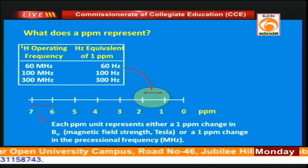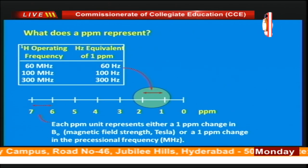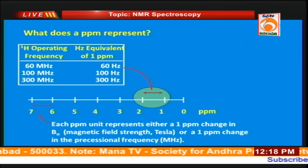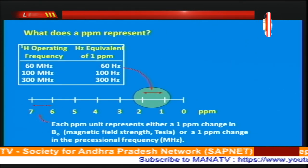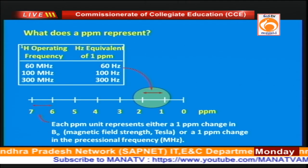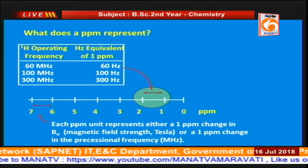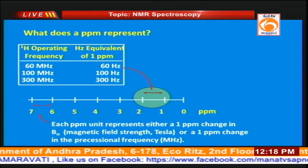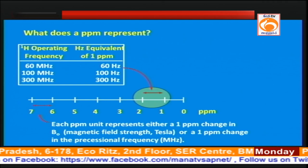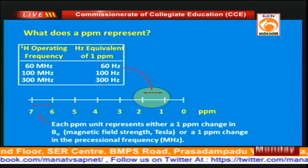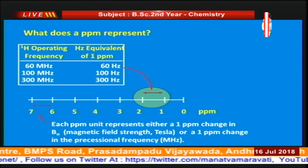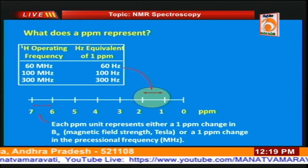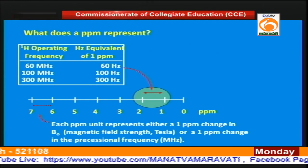What does ppm represent? For example, in a 60 MHz instrument the units will be in the order of 60 MHz — the first unit is 60, second 120, third 180, and so on. In a 100 MHz instrument the first unit is 100, second 200, etc. Therefore, ppm represents the absorption frequencies of the different protons and depends on the operating frequency of the instrument. In a 60 MHz instrument, 1 ppm equals 60 Hz, whereas in a 100 MHz instrument, 1 ppm equals 100 Hz.